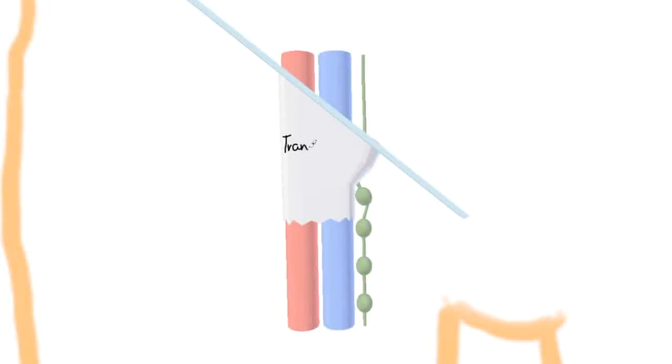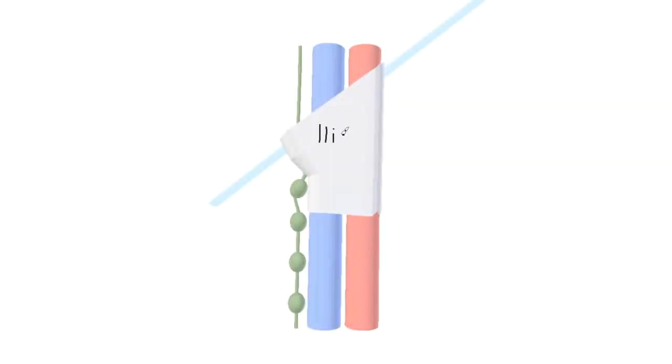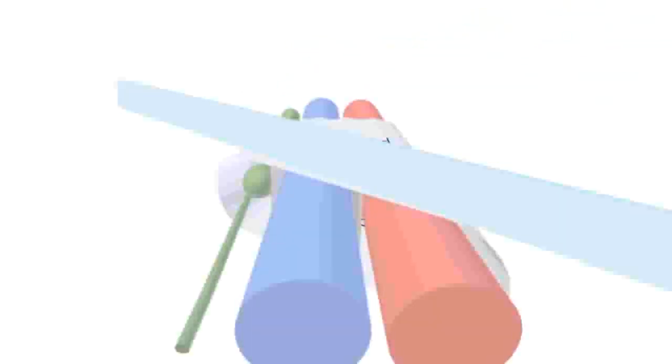The femoral sheath is made by extensions, the transversalis fascia anteriorly, and the iliac fascia posteriorly. It begins at the inguinal ligament.